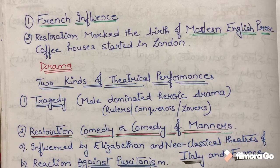If we talk about drama, there were two kinds of theatrical performances. The first was tragedy — a male-dominated performance featuring heroic drama, with rulers, conquerors, and lovers as central characters.